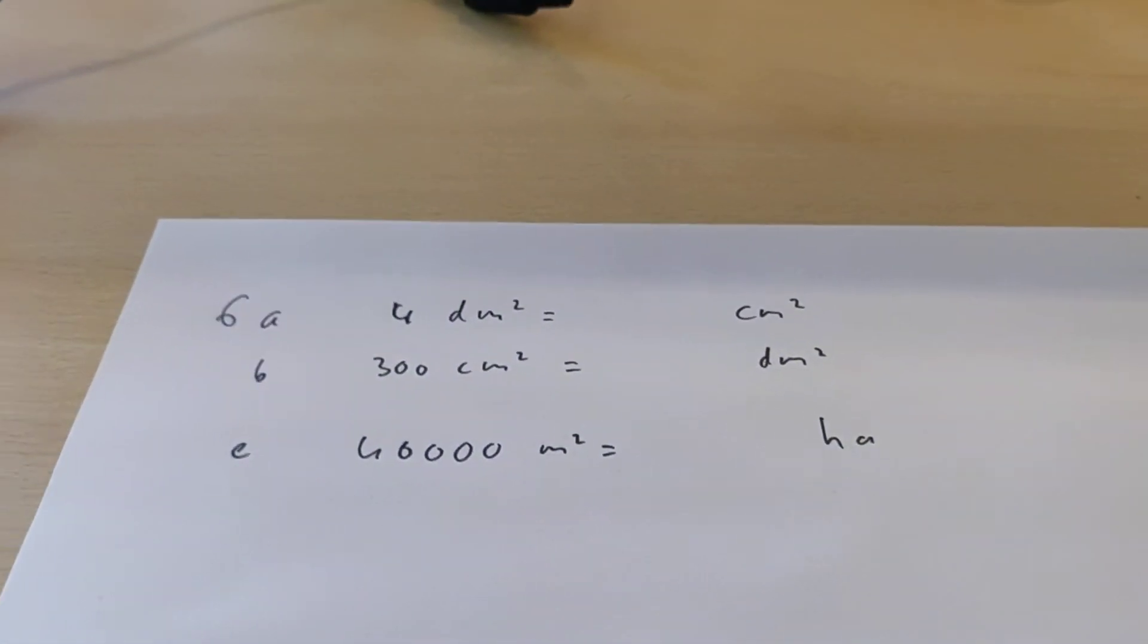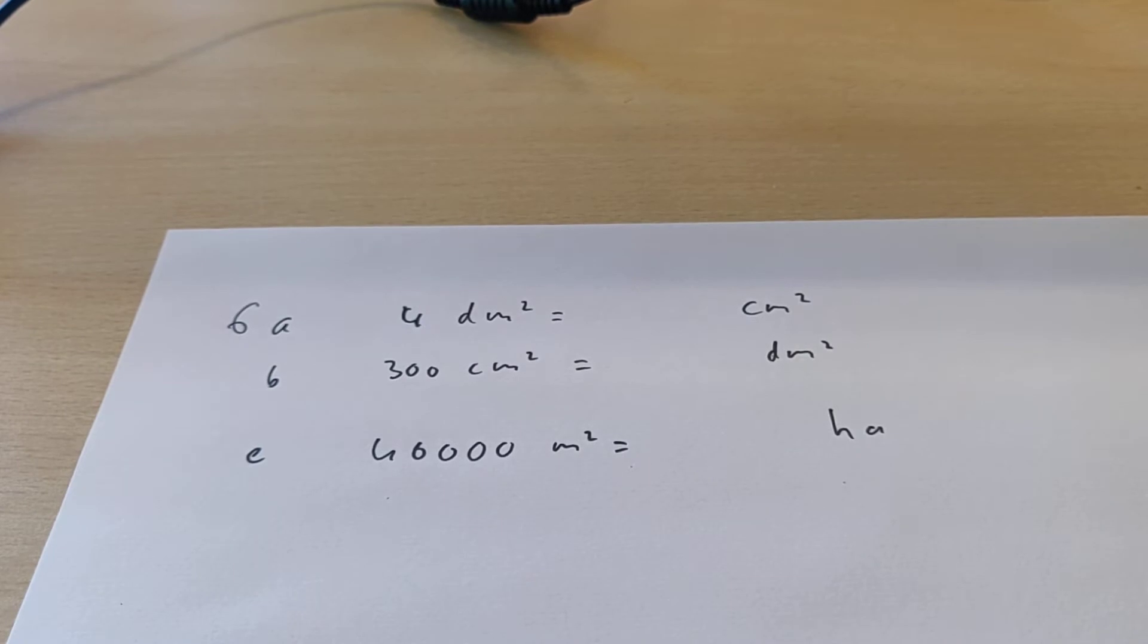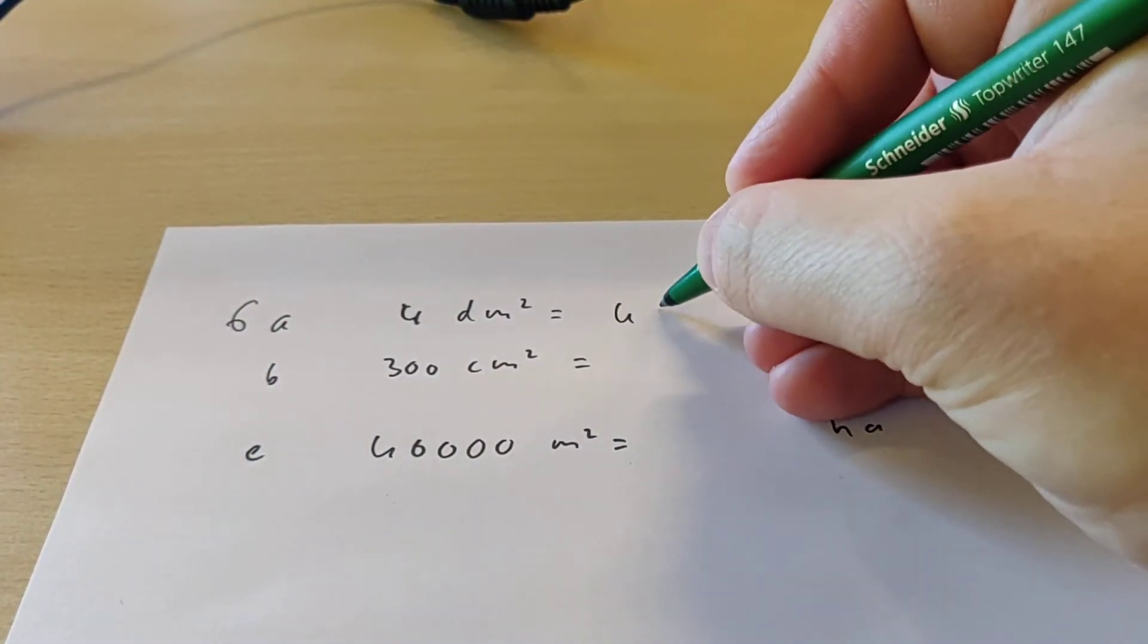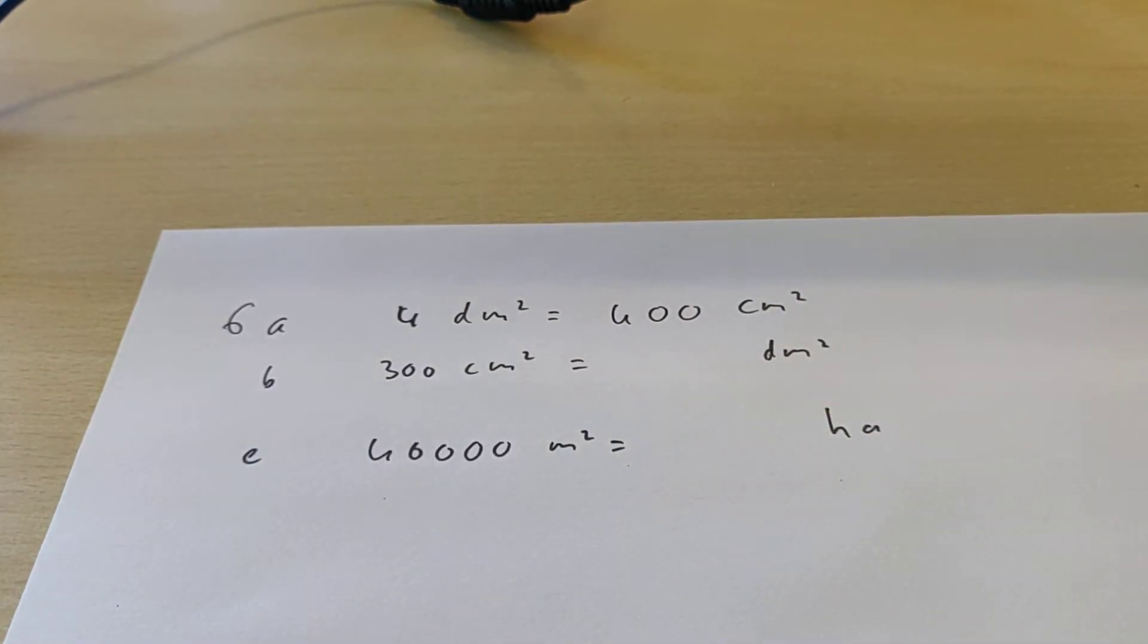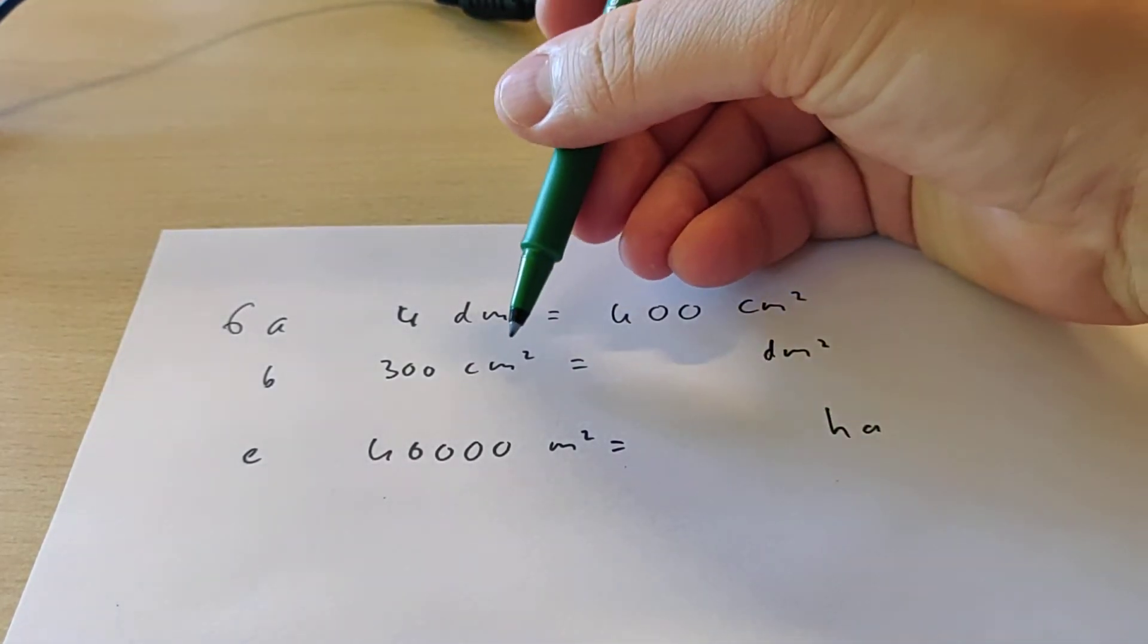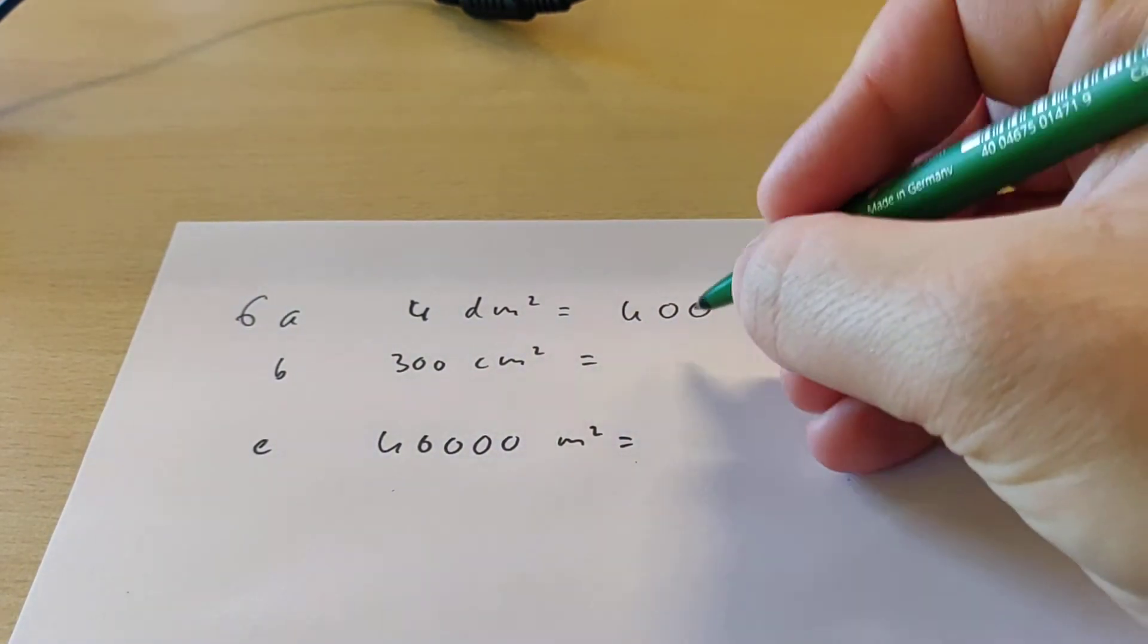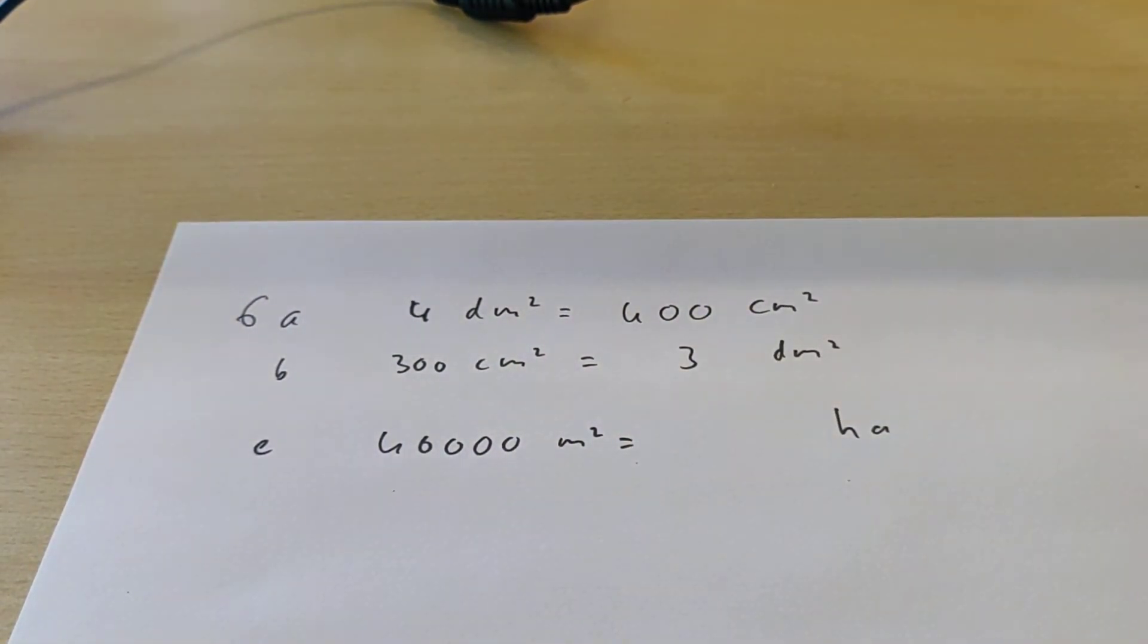So if you go from decimeters to centimeters, then that's one step to the right. That means you multiply this with 100, so you get 400 squared centimeters. But the other way around, if you go from centimeters to decimeters, that's one step to the left. So then you divide it by 100, so then you have 3.